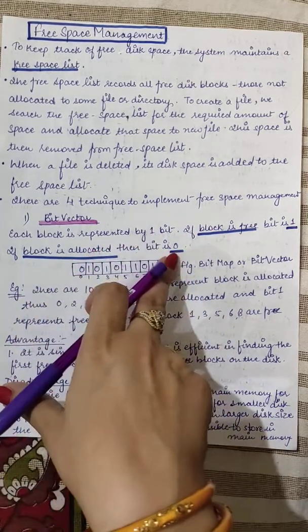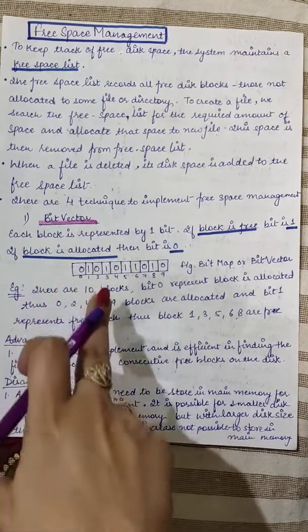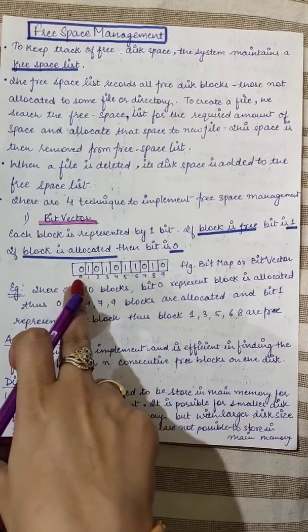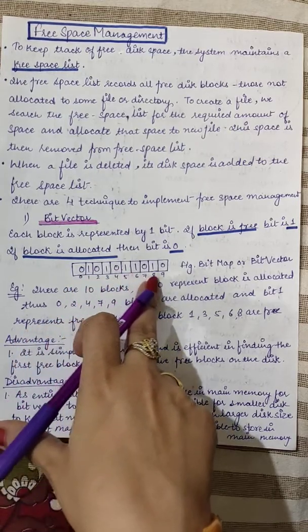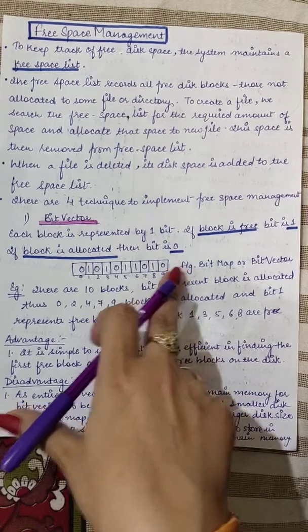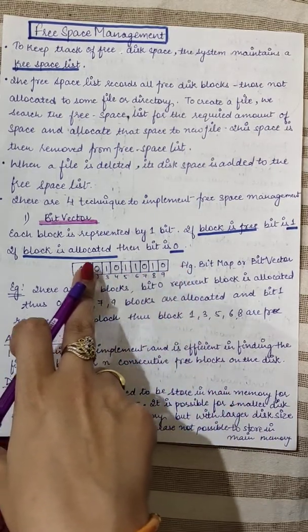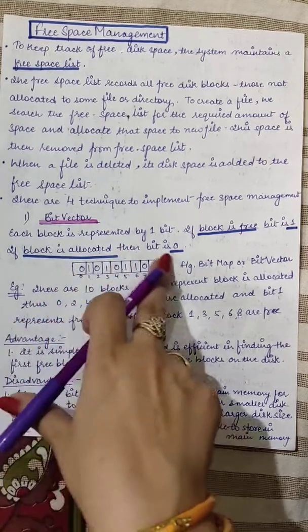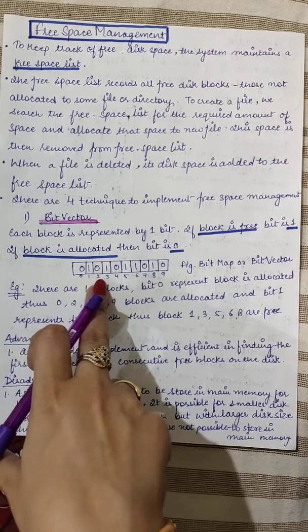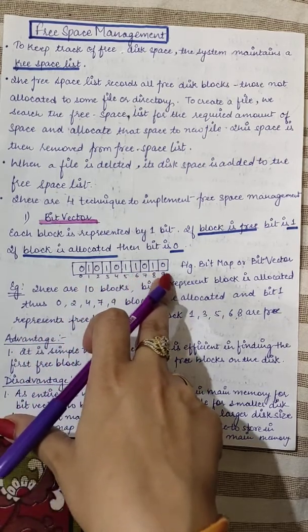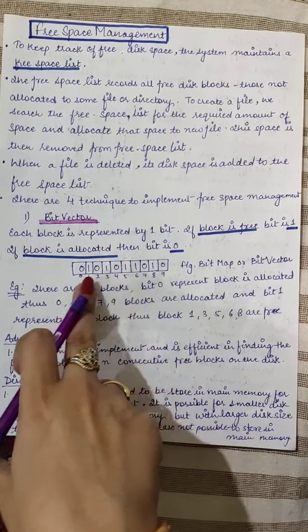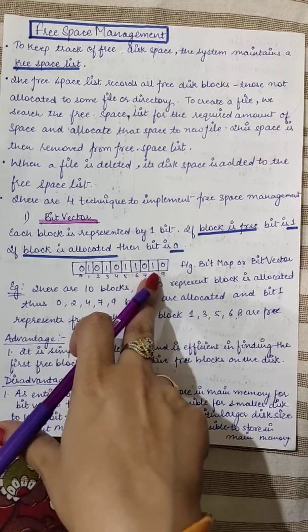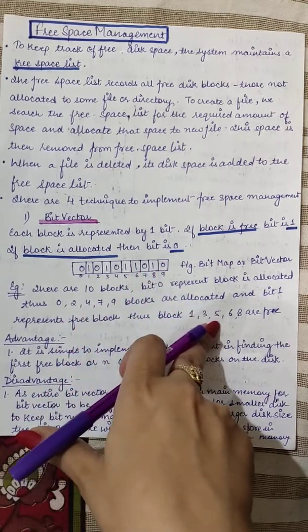If the bit is set to zero, the block is allocated. For example, we have 10 blocks on a disk with addresses zero through nine. The blocks which have zero as the bit are allocated. For the given bitmap, block numbers zero, two, four, seven, and nine are allocated blocks — they are in use. Whereas block numbers one, three, five, six, and eight are the free blocks.